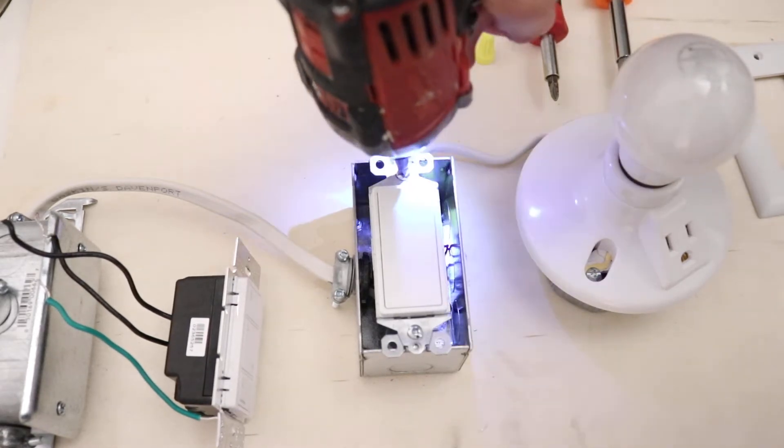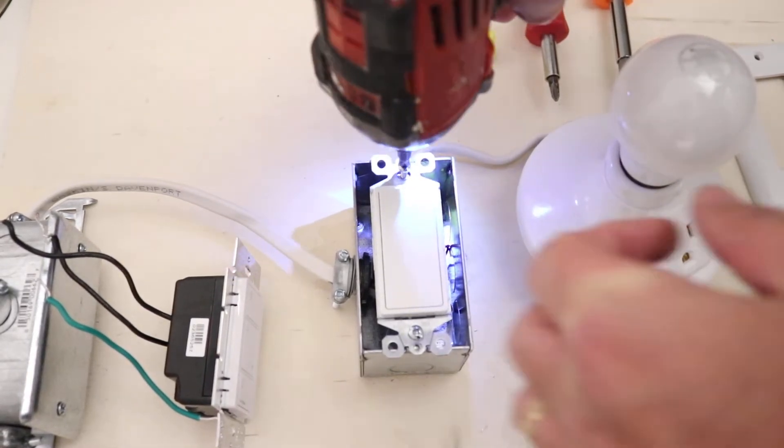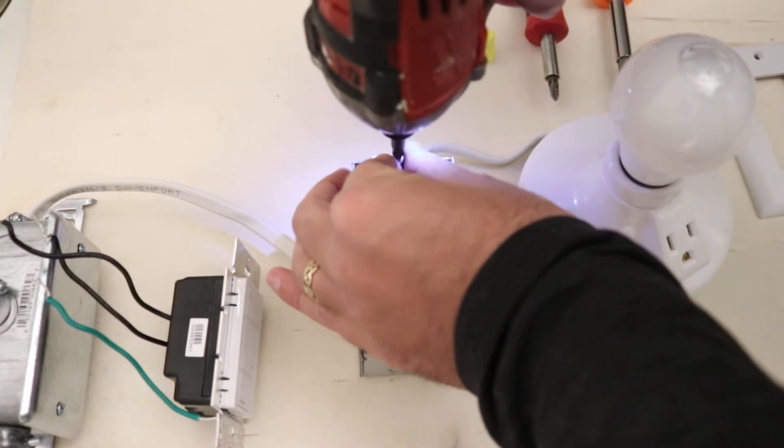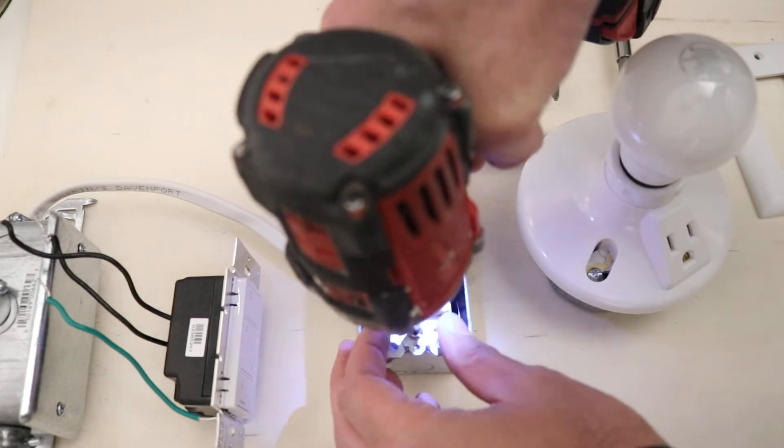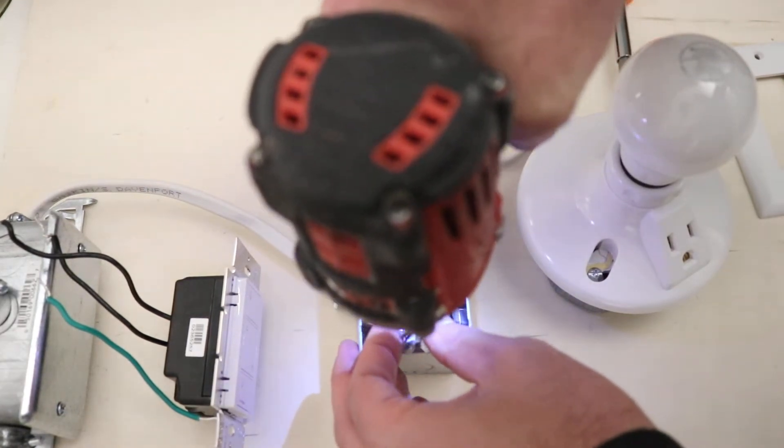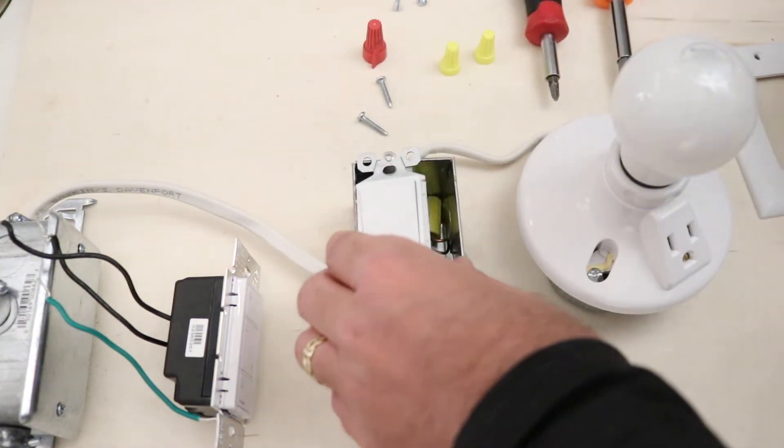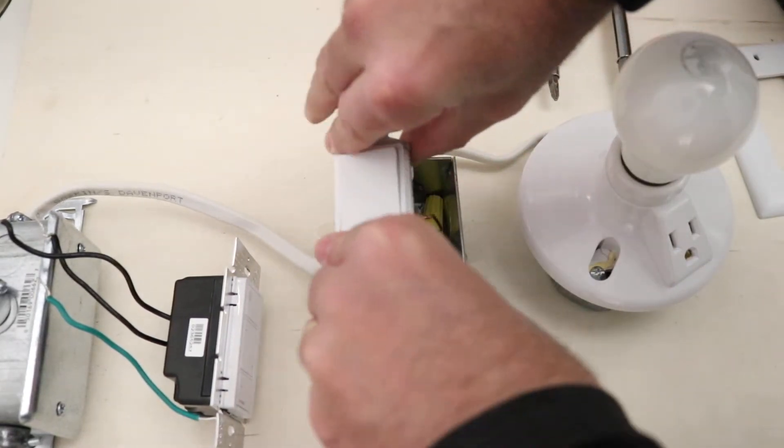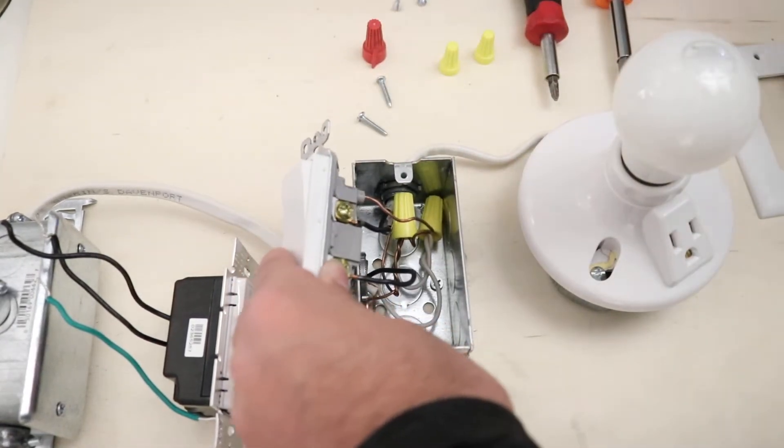And then you can just remove these two screws here that secure the light switch to the junction box. So we've removed those, remove this other one here. Pull the light switch forward so that you can extend and work with the wiring. You're going to be able to see the wiring here.